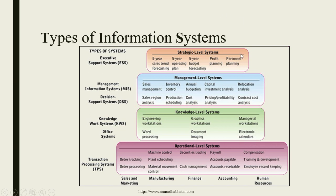At the top is the strategic level — the Executive Support System — which means planning where you want to see yourself five years down the line, so you can align your TPS, KWS, DSS, and MIS to support five-year sales forecasting and operational planning. These are the different levels of information systems, and the most important one we will be studying is the Management Information System. This video is a brief overview of what information is, why it matters, and the different types of system paradigms before designing a predictive analysis model.